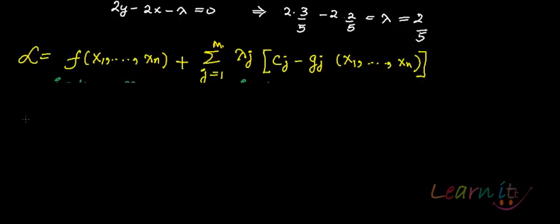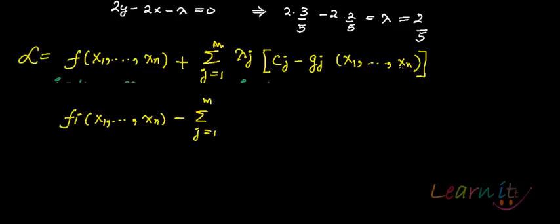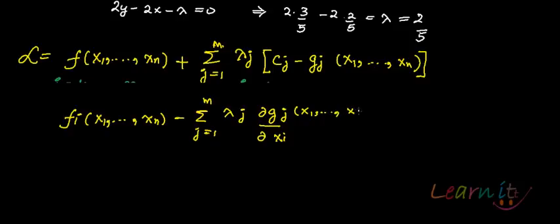For the first-order conditions, you find the partial derivative: del f / del x_i (x₁,...,xₙ) minus summation from j=1 to m of lambda_j times del g_j / del x_i (x₁,...,xₙ) = 0. The minus sign appears because g_j enters the Lagrangian through a minus sign. This holds for all i = 1 to n.